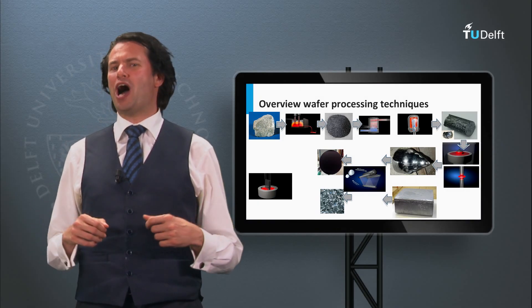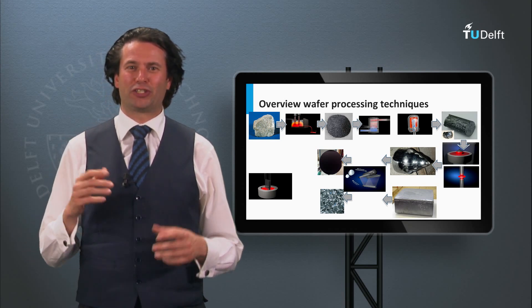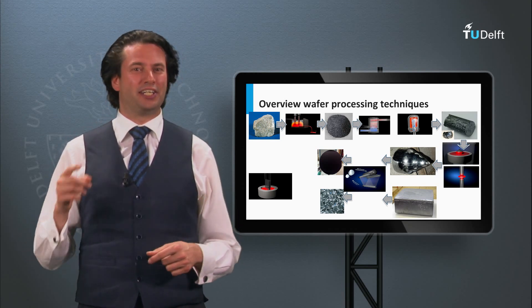Now we know how we make the wafers. Let's make solar cells out of them. We will discuss the design rules in the next block.